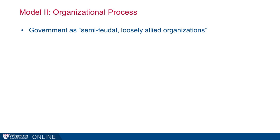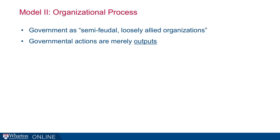But that's only one way. Another model — where Allison really starts digging in — is what he called organizational process. In this model, the government is not a unitary actor but a semi-feudal, loosely-allied organization. You've got different departments, different interests, different groups trained in different ways, and they may not all have the same way of thinking or even the same interests. Governmental actions are outputs — not a deliberate choice, but the output of a routine as they go about their business.